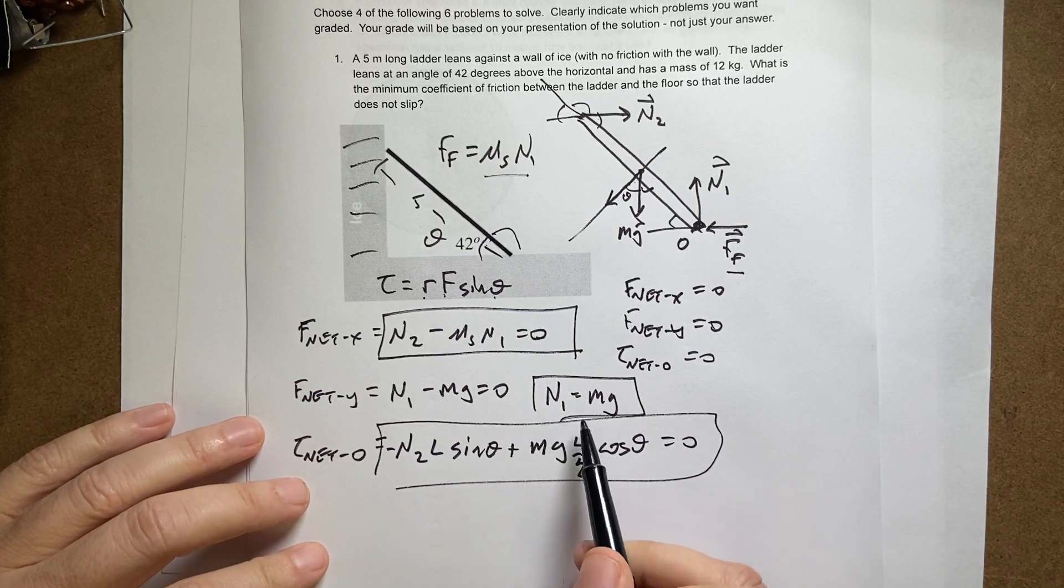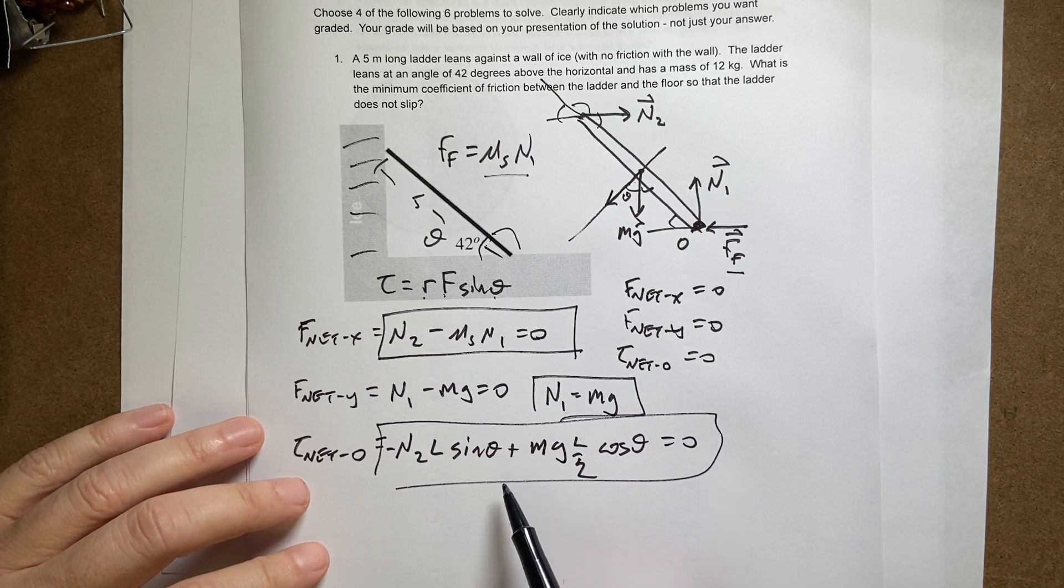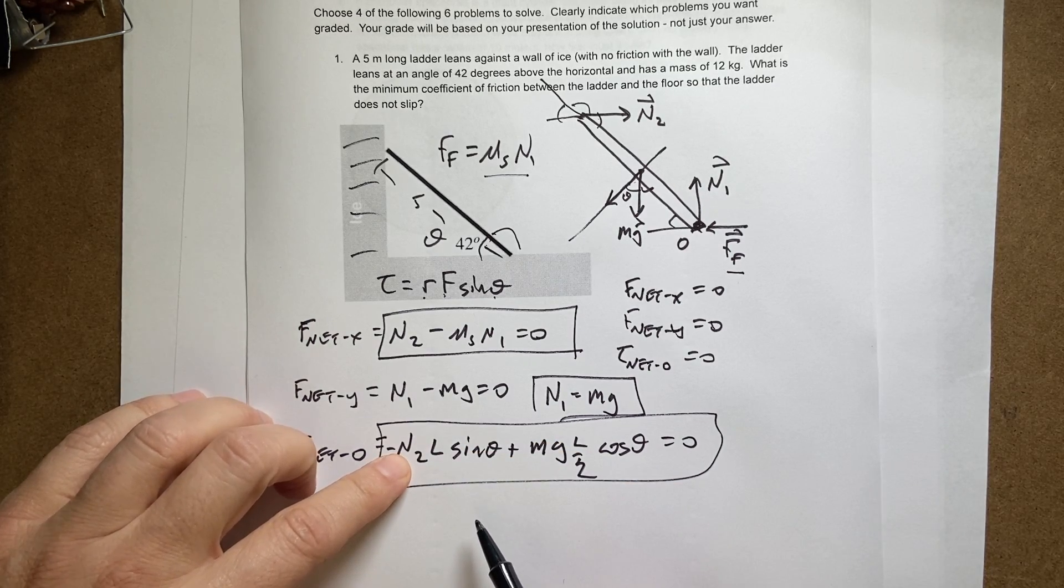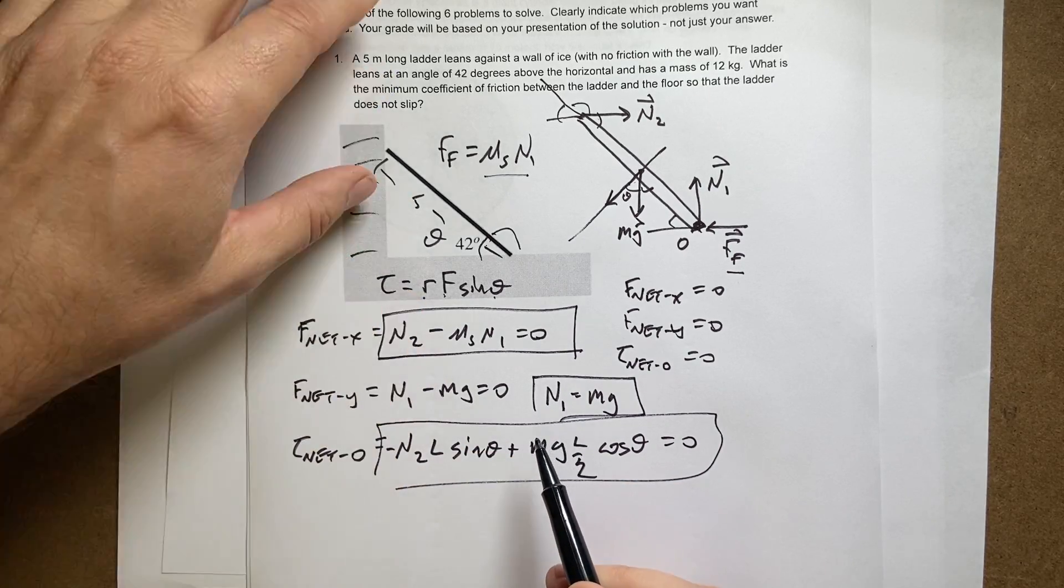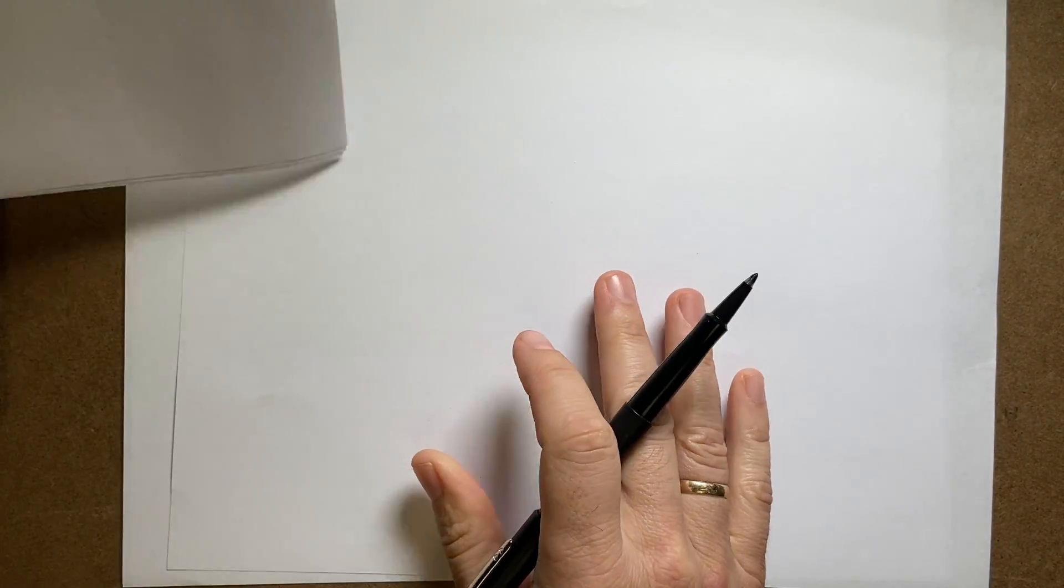So now I have these three equations with three unknowns I can solve. Let's solve this one for N2, and I got that one for N1 and put it all in that equation right there. So I'm going to switch over to a sheet of paper.